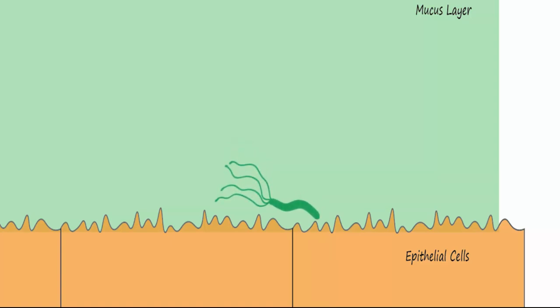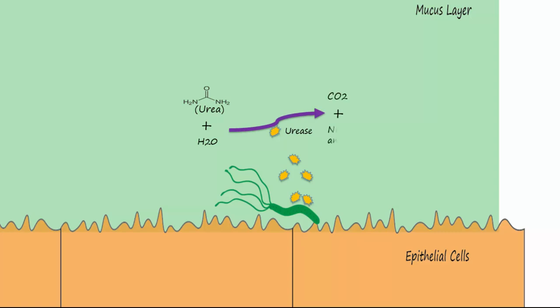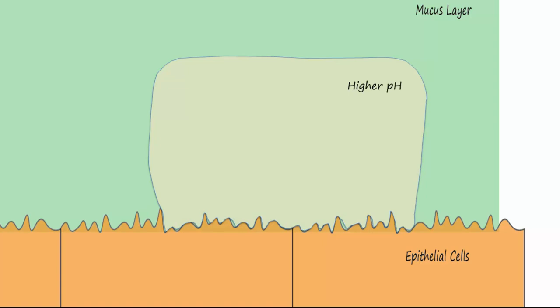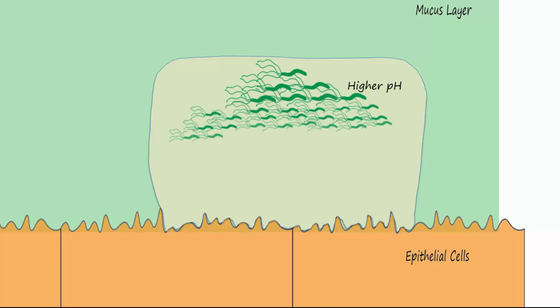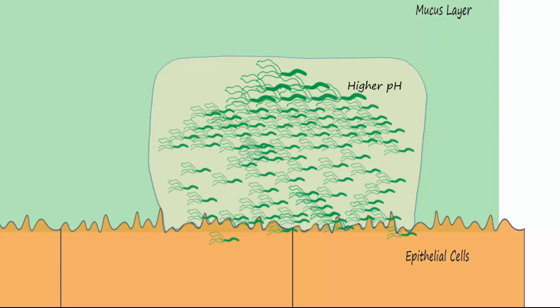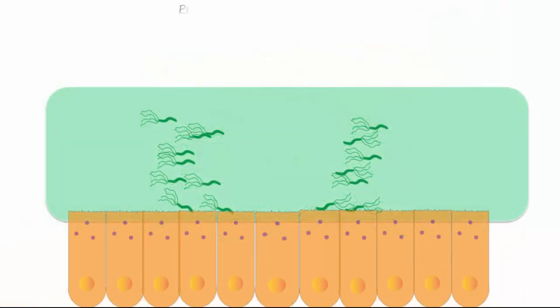As mentioned, H. pylori will migrate away from the areas of the lowest pH. It will also produce an enzyme called urease which will metabolize urea into carbon dioxide and ammonia, which is basic and will take on a hydrogen to neutralize the acid in the immediate surroundings of the bacteria. This higher pH creates an environment where the bacteria can more readily proliferate. Some of the bacteria even enter the epithelial cells.